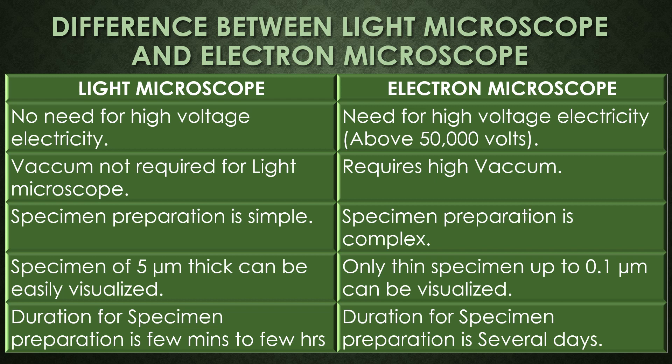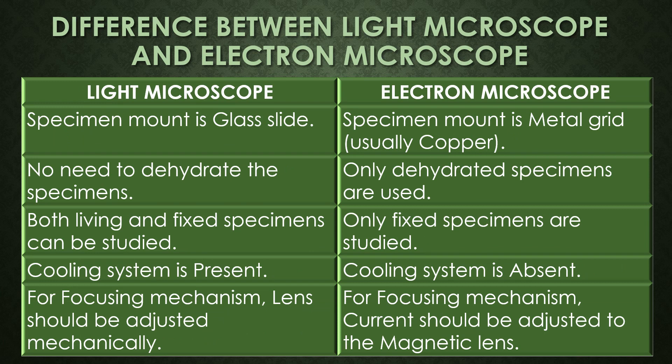Specimen preparation is simple for the light microscope but complex for the electron microscope. Specimens of 5 micrometers thick can be easily visualized under the light microscope, but in the electron microscope only thin specimens up to 0.1 micrometers can be visualized. The duration for specimen preparation for the light microscope is a few minutes to a few hours, but for the electron microscope it takes several days. In the light microscope the specimen mount is a glass slide, and in the electron microscope the specimen mount is a metal grid, usually copper.